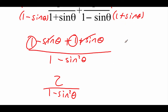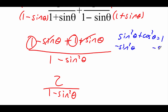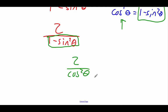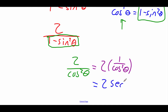Now I'm looking to simplify. We have the Pythagorean identity sine squared of theta plus cosine squared of theta equals 1. If we subtract sine squared over, we get cosine squared of theta equals 1 minus sine squared of theta. So I'm going to replace 1 minus sine squared with cosine squared, giving us 2 over cosine squared of theta. I'll pull the 2 out in front: 2 times 1 over cosine squared of theta. Using a reciprocal identity — cosine and secant are reciprocals — this becomes 2 secant squared of theta.